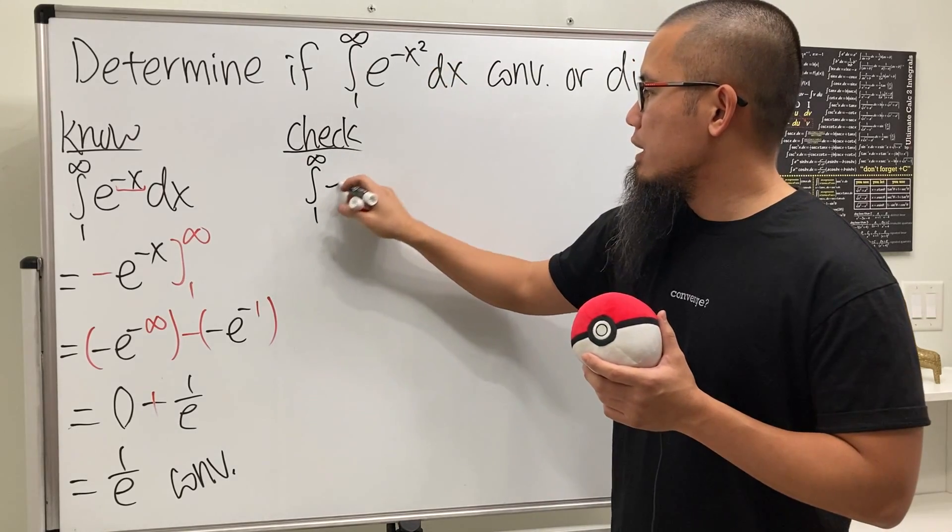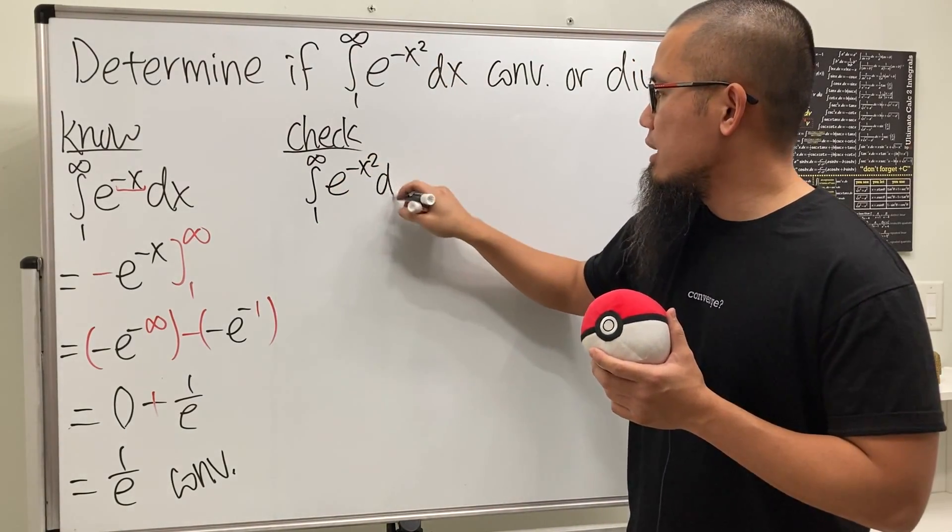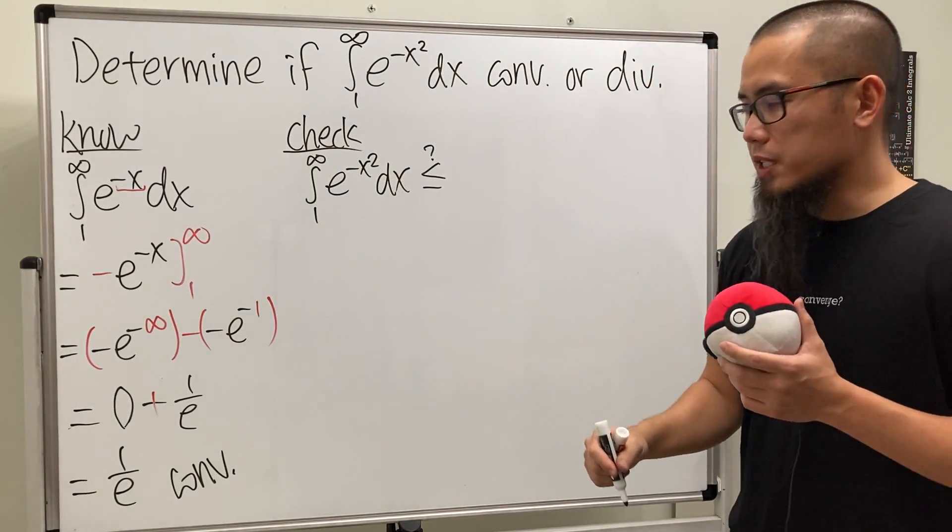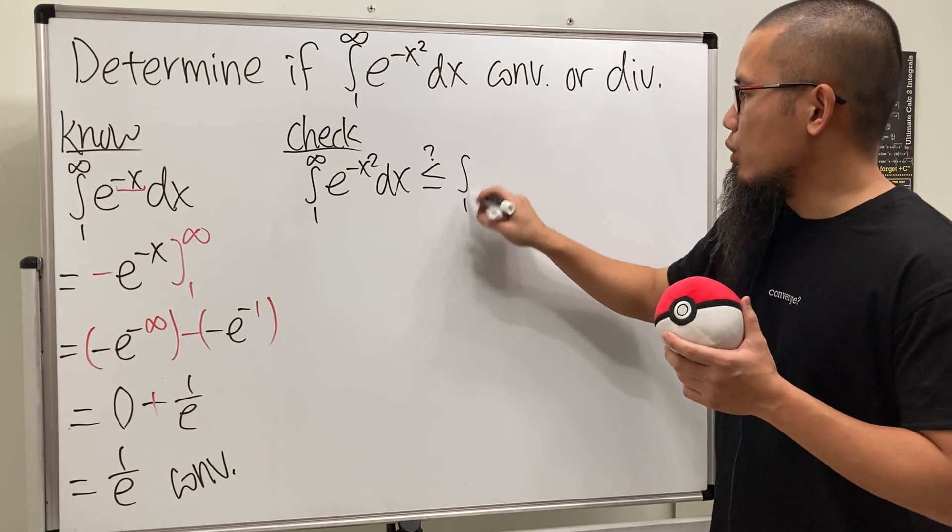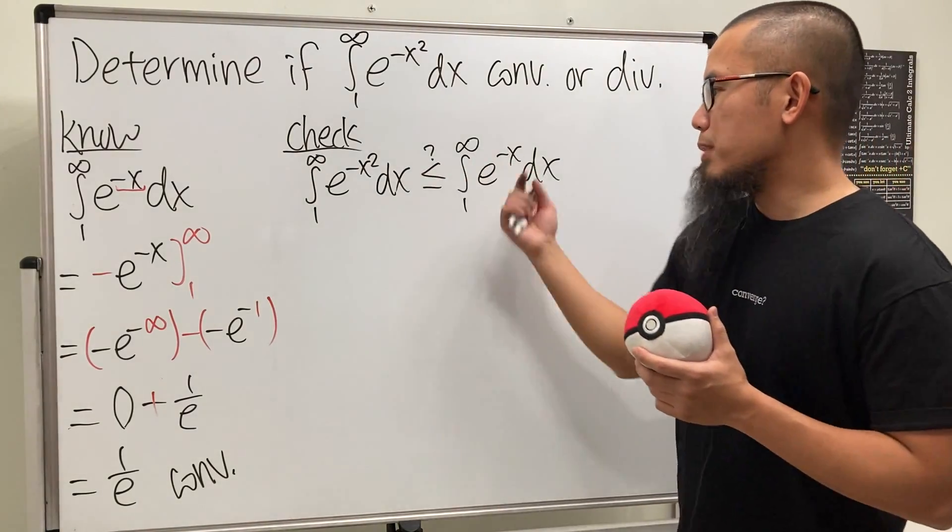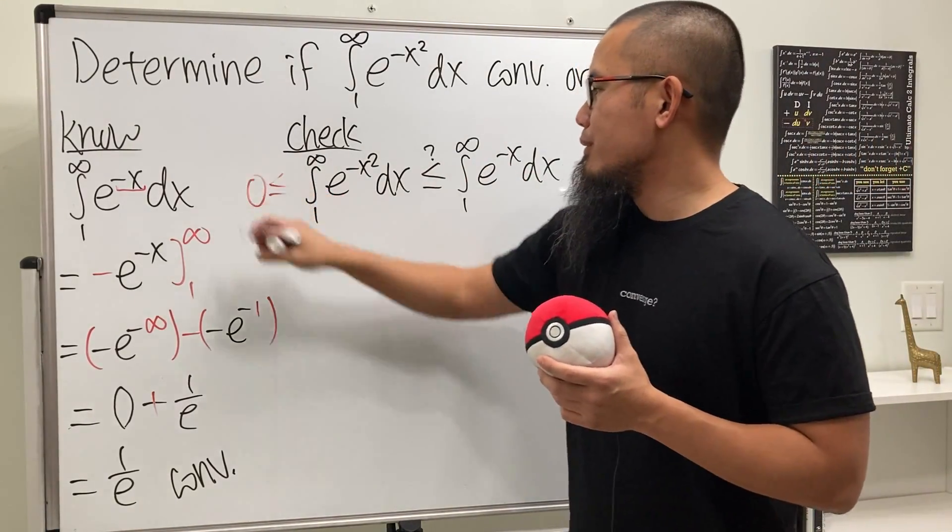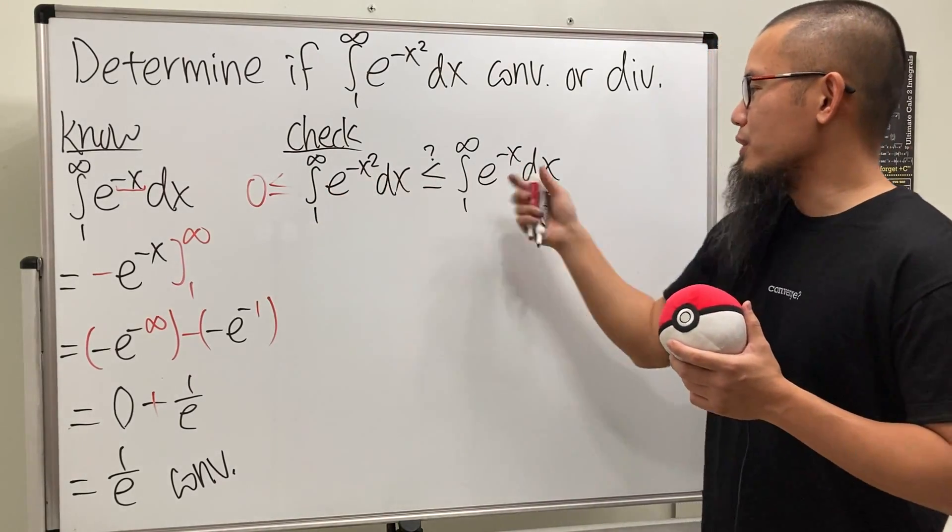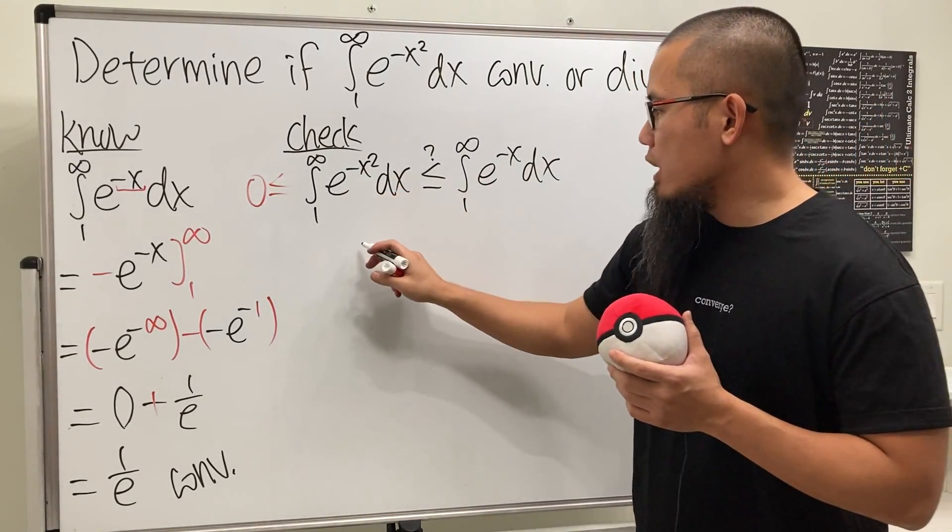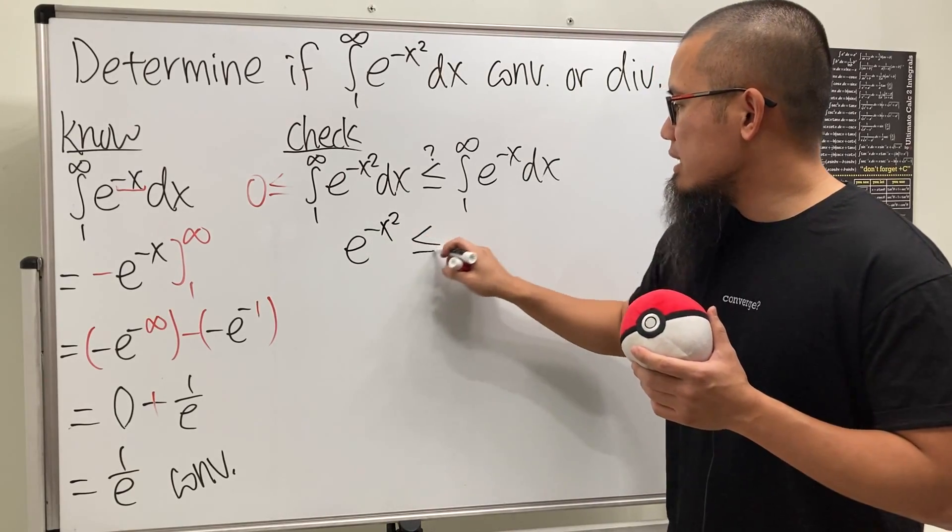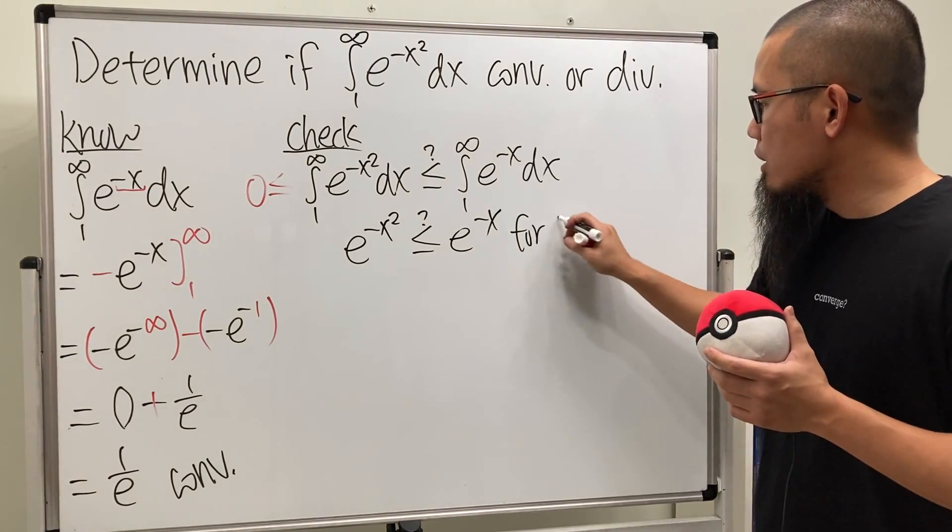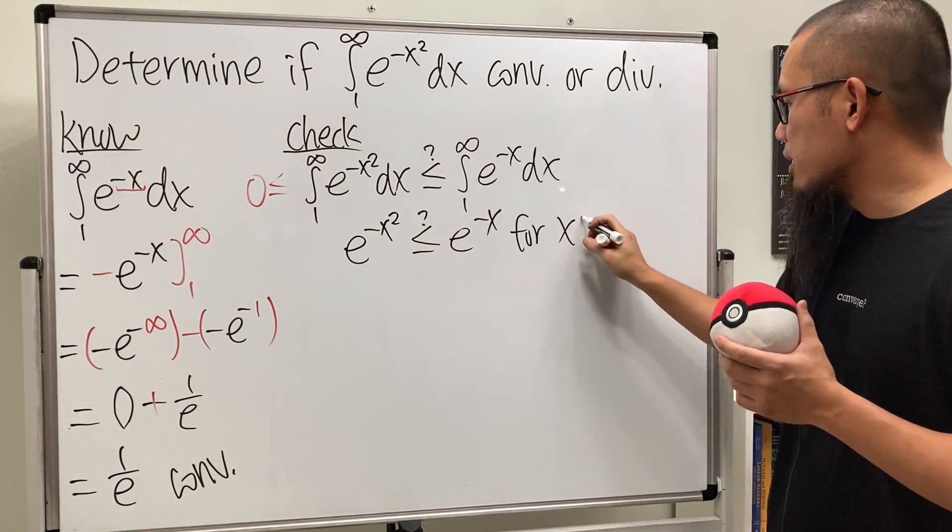The integral going from 1 to infinity of e to the negative x squared dx. We wish to show this right here is true, but we don't know yet. So put down a question mark. And then put this down on the right-hand side: integral going from 1 to infinity, e to the negative x. Now you see, everything is positive. That's good. If you graph the functions, you will see everything is positive. So don't worry about it.